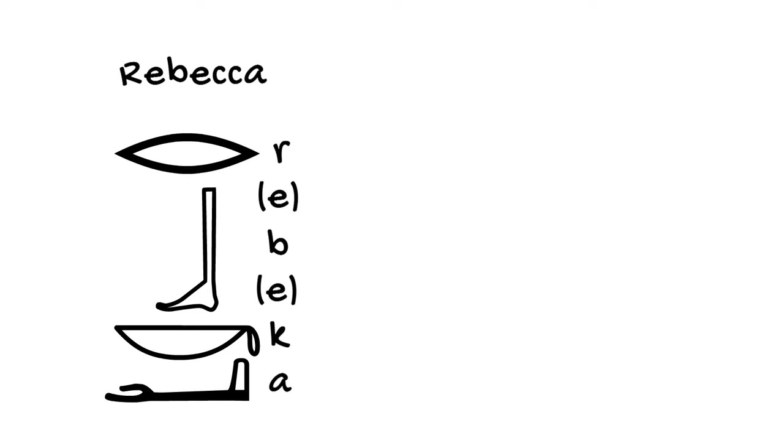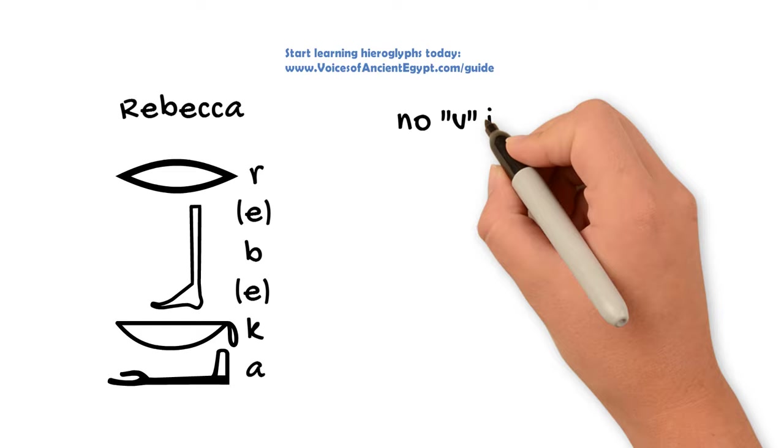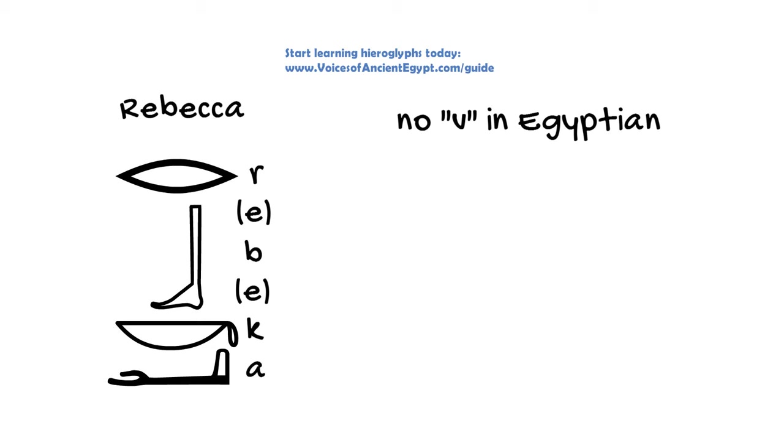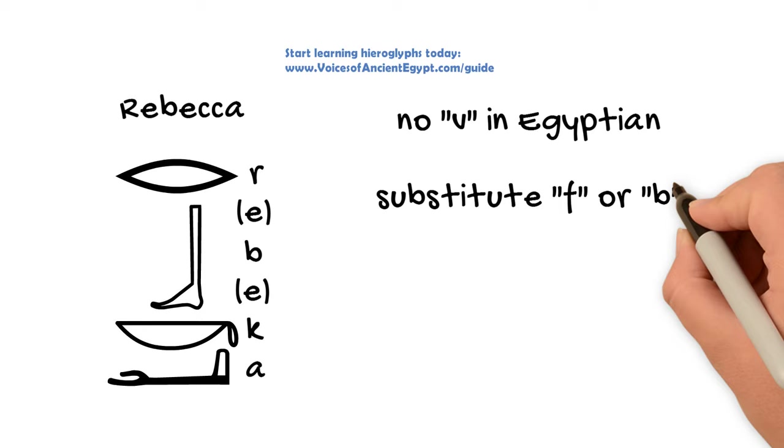In addition to the ancient Egyptians not having a sound equivalent for our letter L, they also did not have an exact equivalent for our letter V, the V sound. So if you have this in your name, you'll need to substitute something similar, such as the F or a B, since these are both linguistically similar sounds to V.